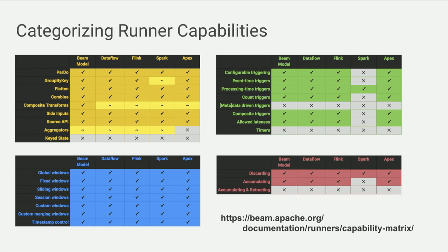Since Beam is not an intersection of all runners, not every pipeline can run everywhere. If an engine can't run streaming pipelines, there's nothing you can do about that. To be clear and honest about it, we have a capability matrix that enumerates various features of the model and explicitly covers whether they work on a particular engine or not. In practice, every pipeline can run on multiple engines, but not every pipeline can run on every engine.